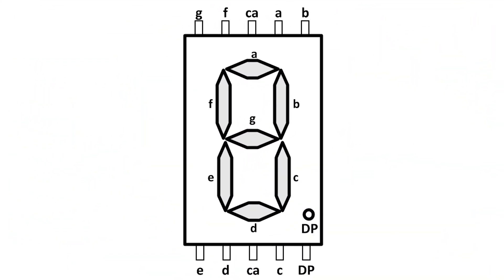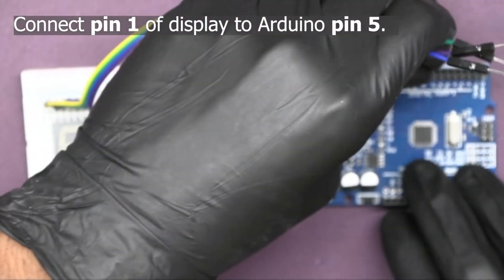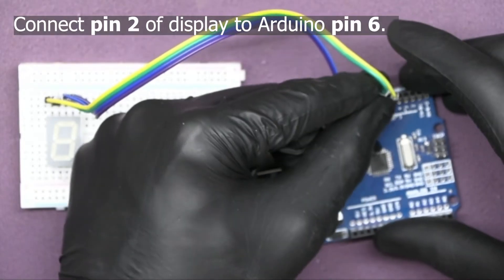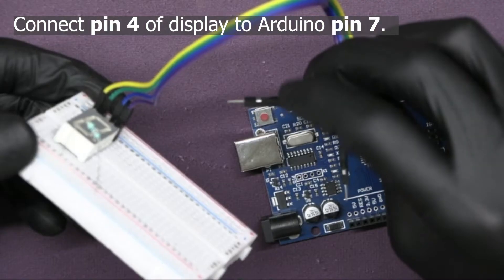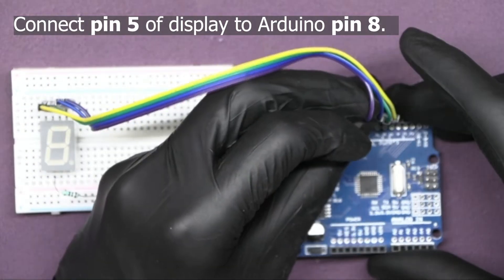Wire resistor. Next we'll connect each segment of the display to digital pins on the Arduino. Refer to this circuit diagram to know which pin corresponds to which segment. Pin number 1 of display to 5 of Arduino, then pin 2 to 6 of the Arduino, 4 to 7 of Arduino, and pin 5 to 8 of Arduino.